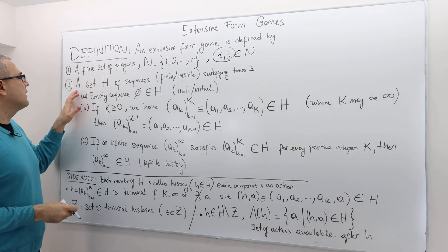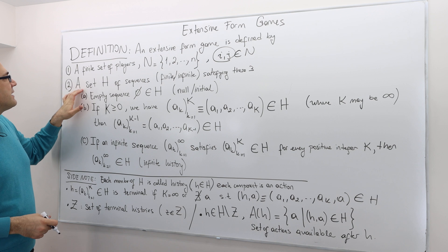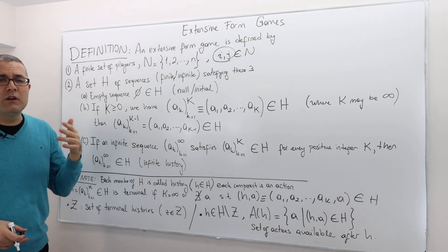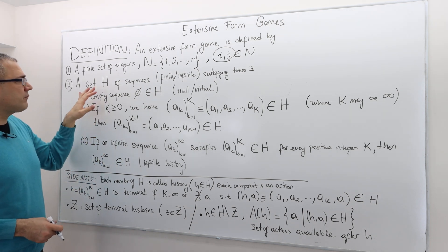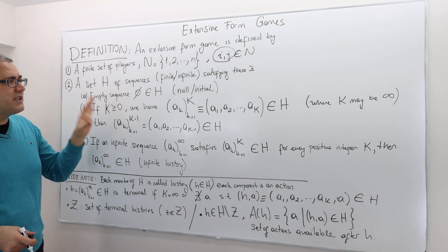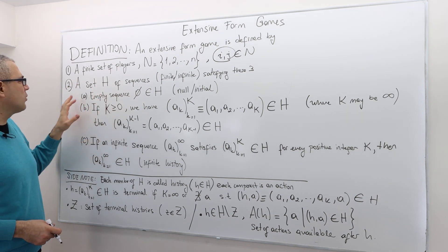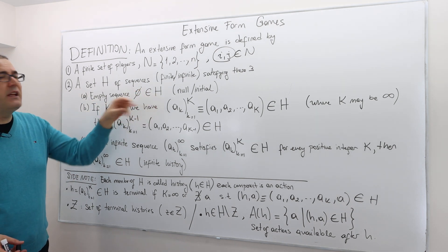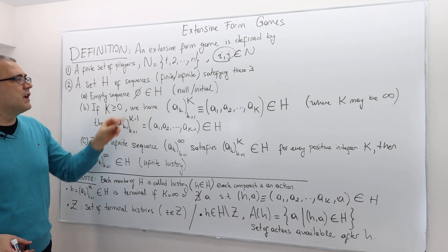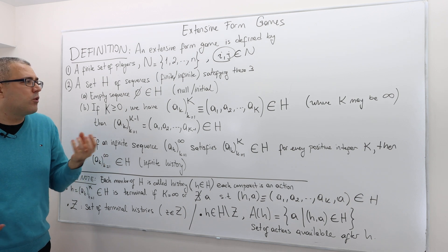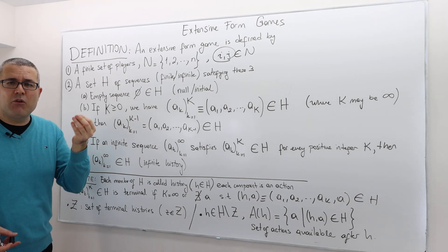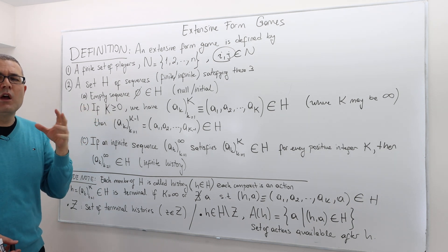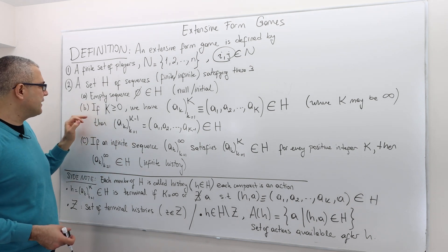A very important concept: histories. A set H of sequences — maybe finite or infinite, depending on the length of the game. This set H must satisfy three properties. First, the empty sequence must be an element of the set of histories. We call this the null history or initial history. It basically denotes the beginning of the game. We need that because we need to specify, as a notation, what the beginning of the game is.